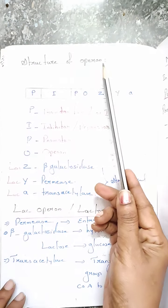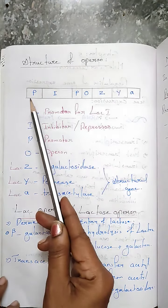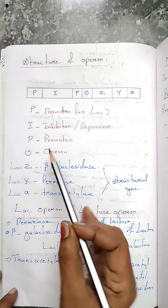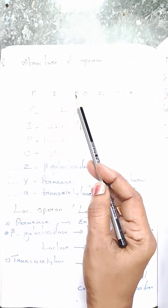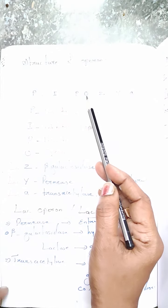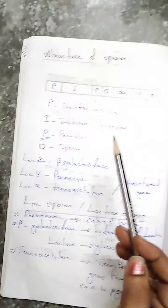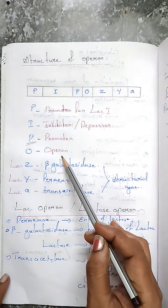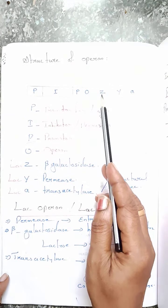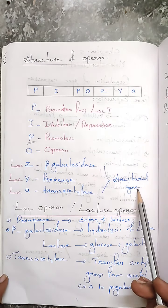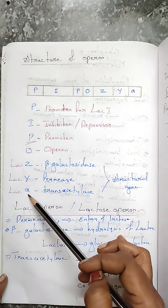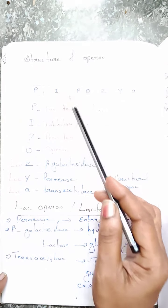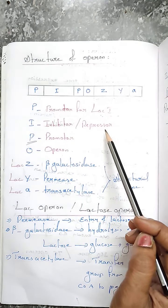Now let us see the structure of this operon. The operon consists of a P region — P denotes promoter — and an O region, which is the operator. After the operator, it consists of structural genes: Z, Y, and A. Before the promoter, there is a region called I, which is the inhibitor or repressor.